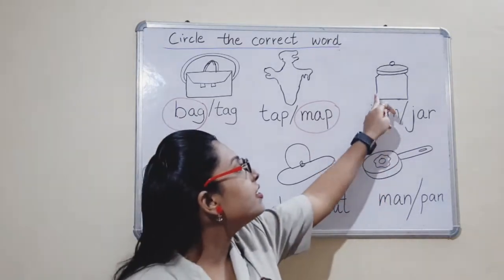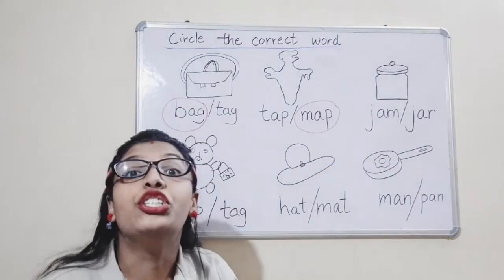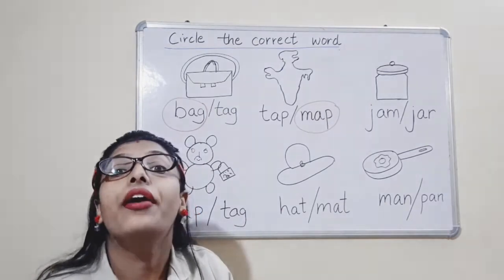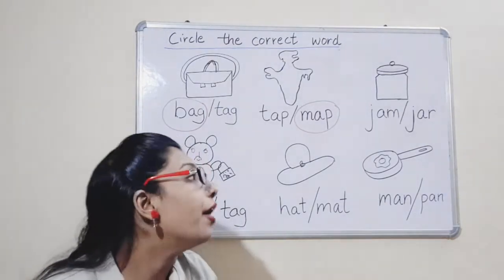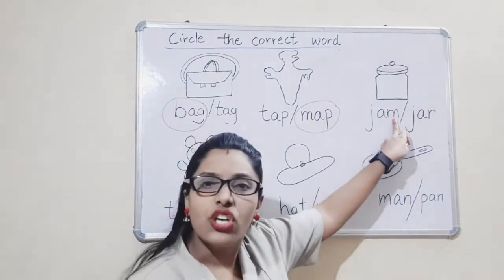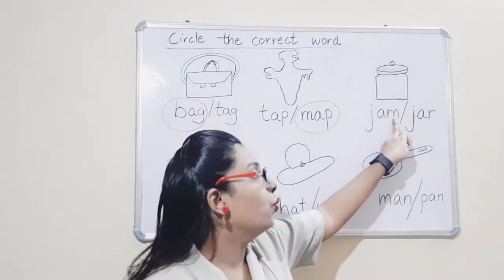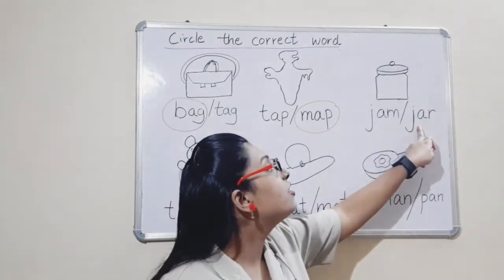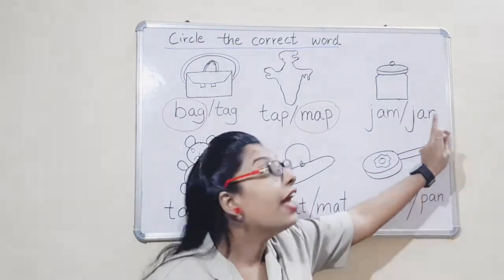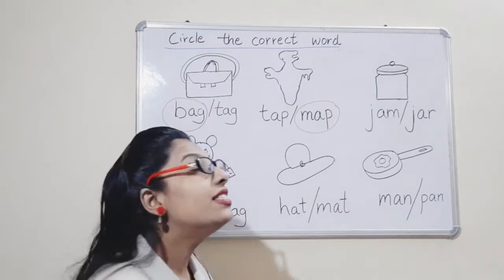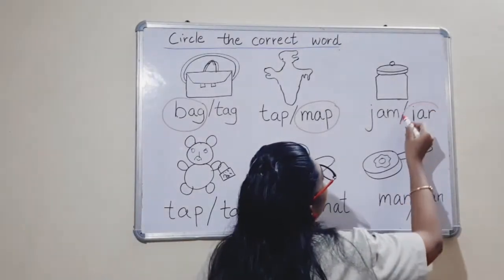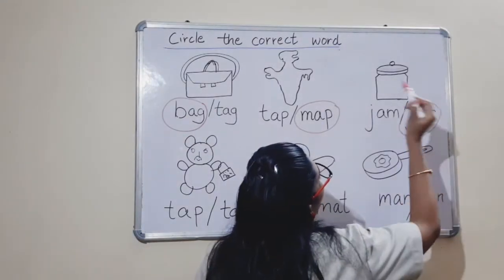What is this? J-A-R — jar. Is this J-A-R? No. Is this J-A-R? Yes. So we will circle it. Circle it, children.